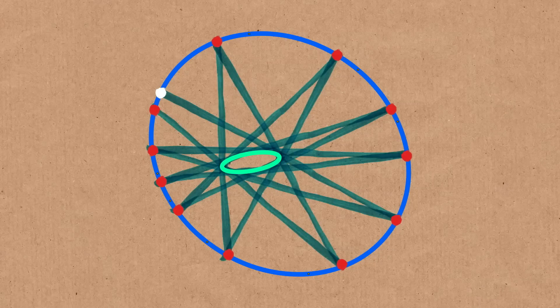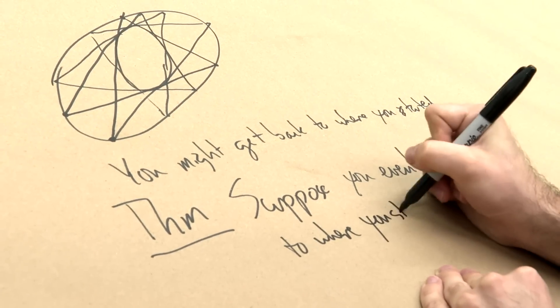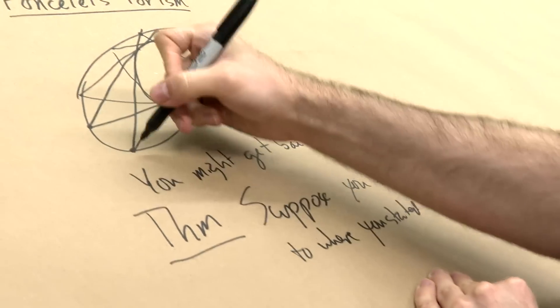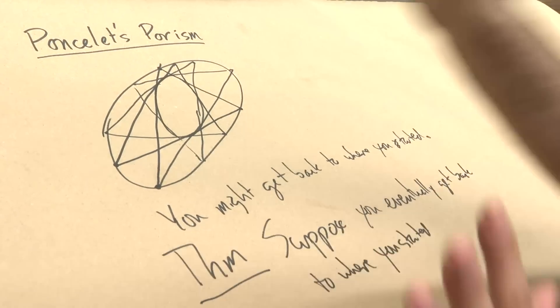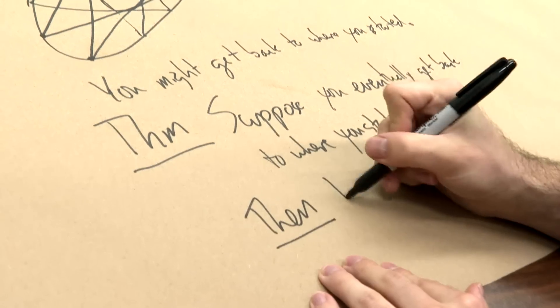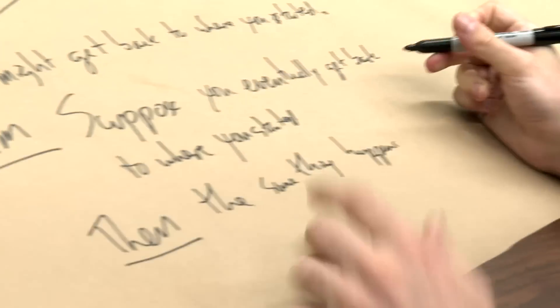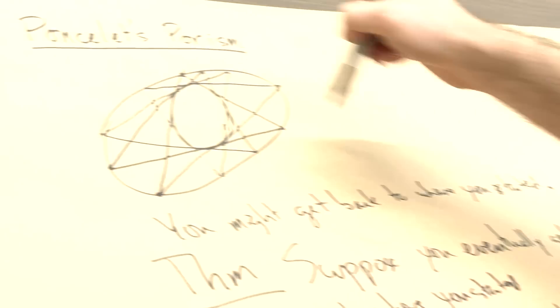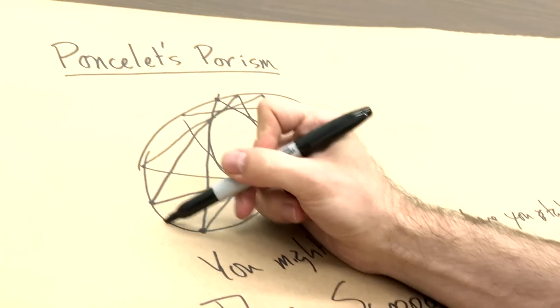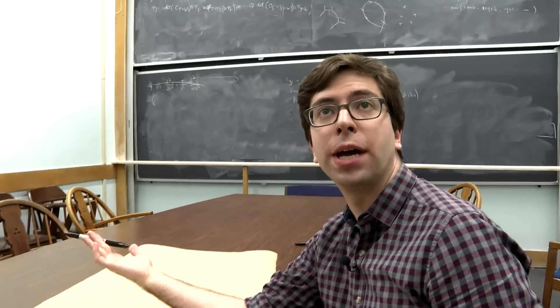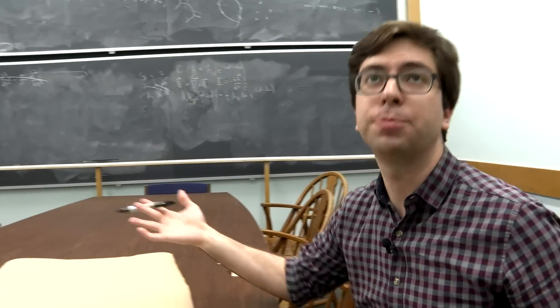But here's the theorem. So suppose you eventually get back to where you started. So you started at this point, you bounce around a lot, and eventually you come back. Then the same thing happens if you start at any point. So all you have to know is that if you start here, you bounce around, you come back. Well, what happens if you started here? The same thing would be true. You'd bounce around a bunch of times and eventually you'd come back to where you started. So that's Poncelet's theorem.